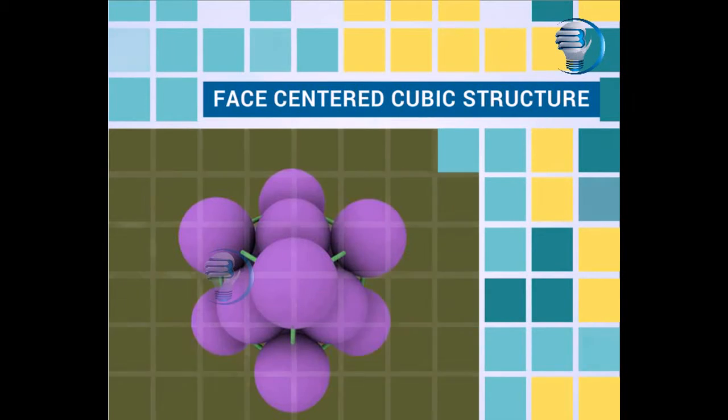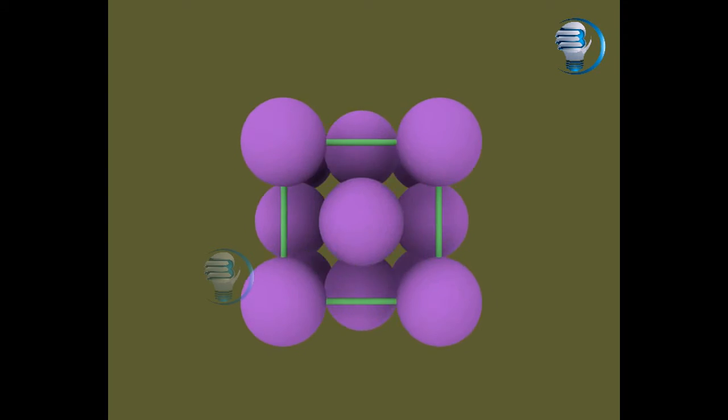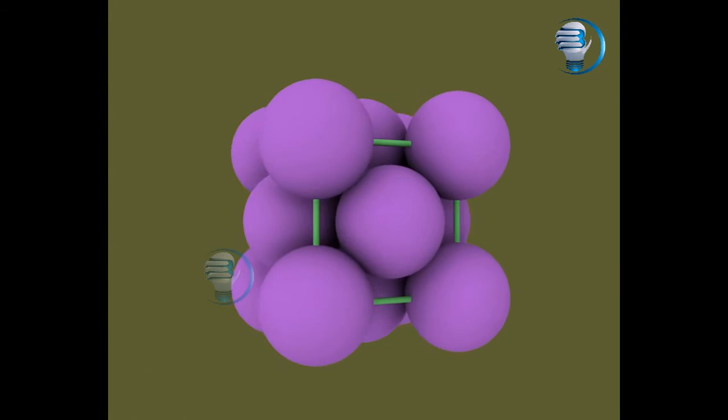Face Centered Cubic Structure. Let us see the FCC structure and how many atoms it has. In FCC structure, the corner atoms do not touch each other.